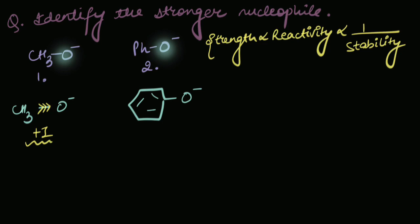The oxygen atom already has a negative charge and somebody is pushing more electron density on it. It would be unstable, right? It wants someone to take away this electron density. And that is exactly what the benzene ring does.